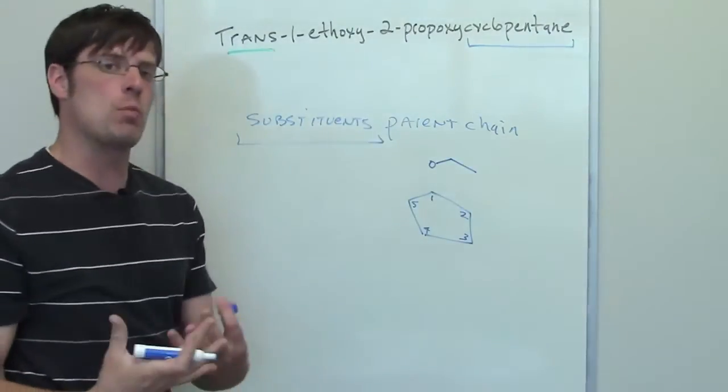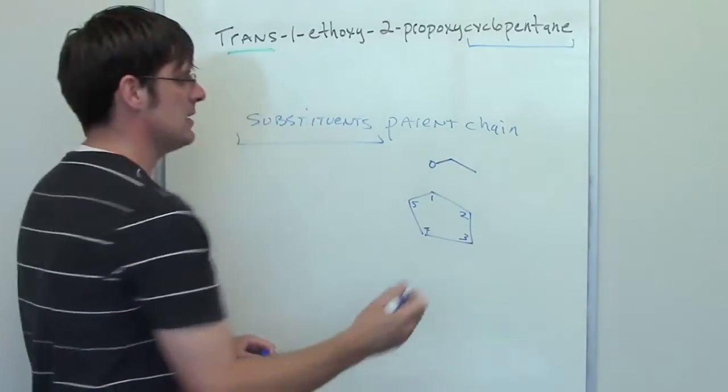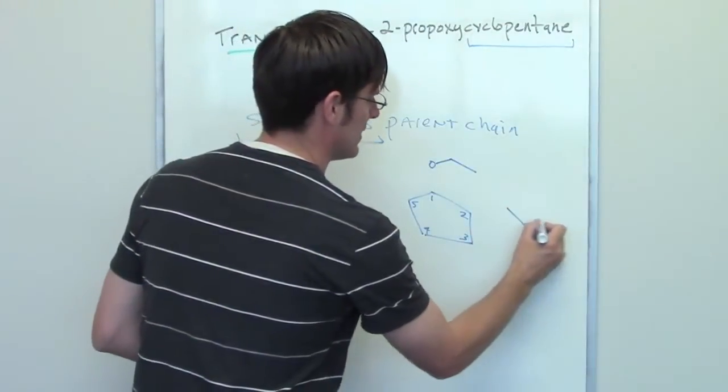On carbon two, I have a propoxy group. What's a propoxy group? Well, it's a propyl chain bonded to an oxygen.